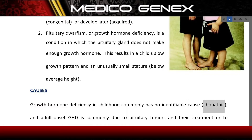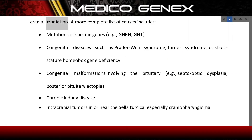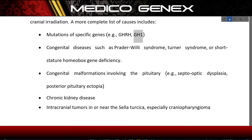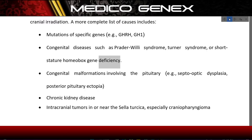Causes of growth hormone deficiency in childhood commonly have no identifiable cause (idiopathic), while adult-onset GHD is commonly due to pituitary tumors and their treatment or to cranial irradiation. A more complete list of causes includes mutations of specific genes, such as GHRH and GH1, and congenital diseases such as Prader-Willi syndrome, Turner syndrome, or short stature homeobox gene deficiency.